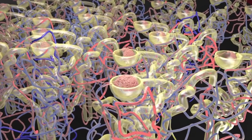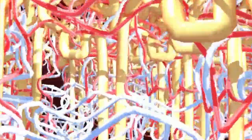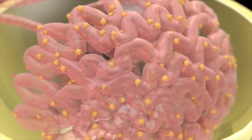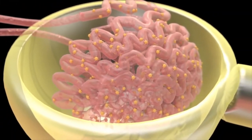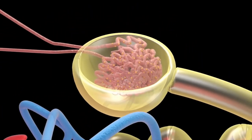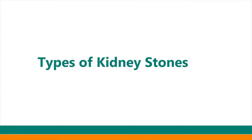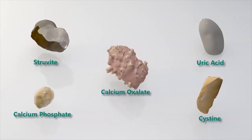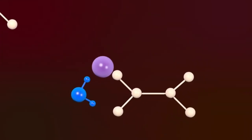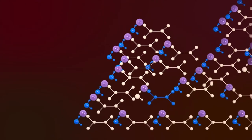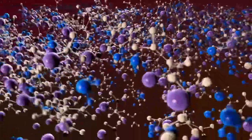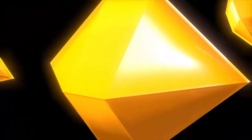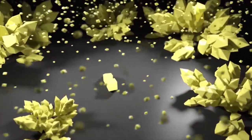Stone formation starts deep in the renal papilla. There are many types of kidney stones: calcium oxalate is the most common, followed by struvite, calcium phosphate, uric acid, and cystine. The ion activity exceeds solubility, and these crystals grow in size in the renal environment through a process called nucleation.